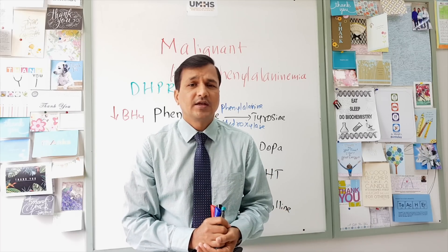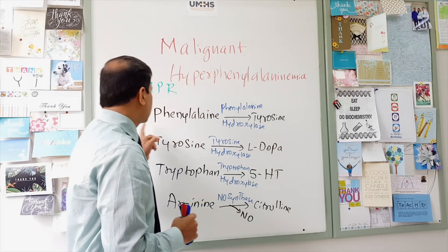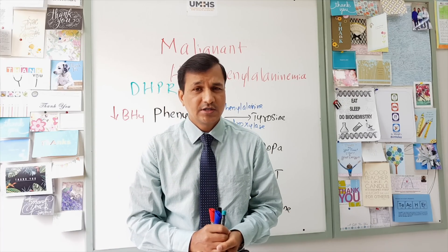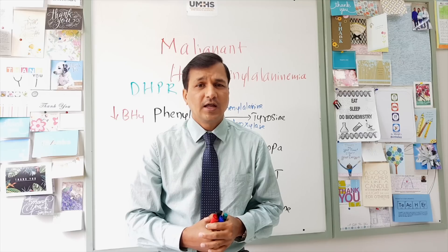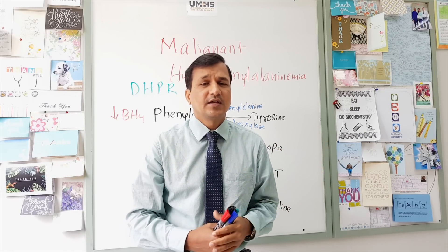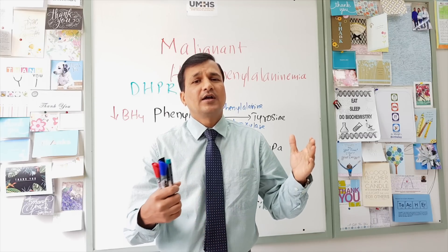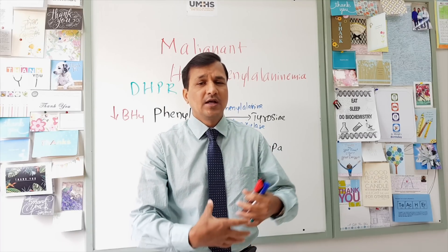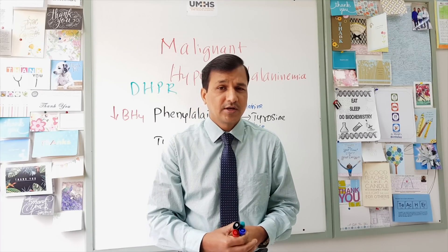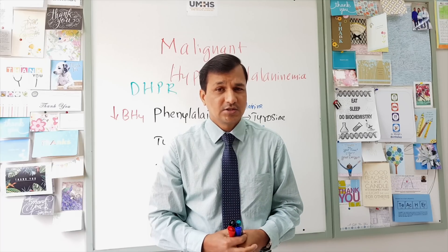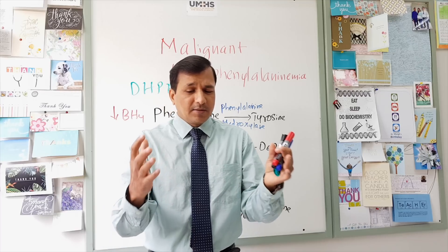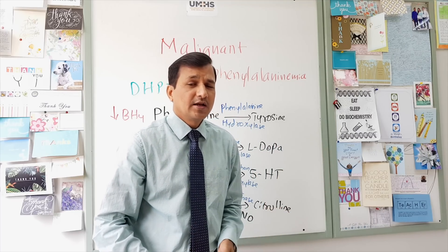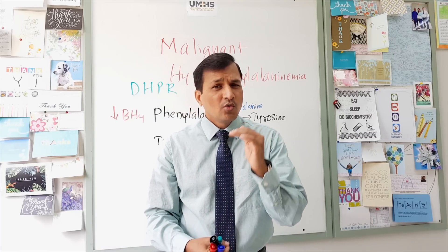Because BH4 is required by phenylalanine hydroxylase, a deficiency of tetrahydrobiopterin leads to decreased conversion of phenylalanine into tyrosine and accumulation of phenylalanine in tissues. This accumulated phenylalanine follows the same alternate metabolic pathways, being converted into phenylpyruvate, phenylacetate, and phenylethanolamine, which appear in urine — producing all the same signs seen in classical phenylketonuria, including mental retardation, eczema, and hypopigmentation.